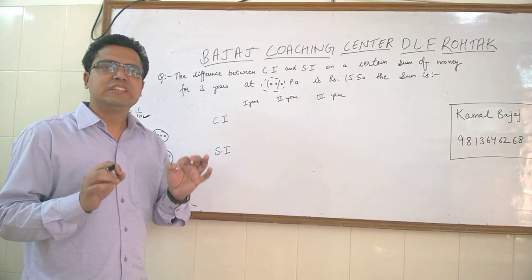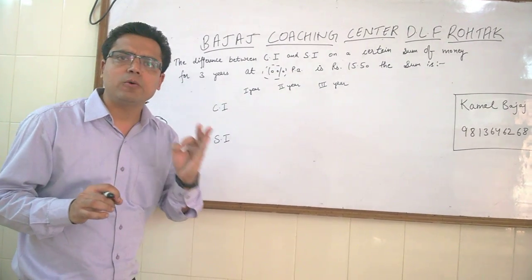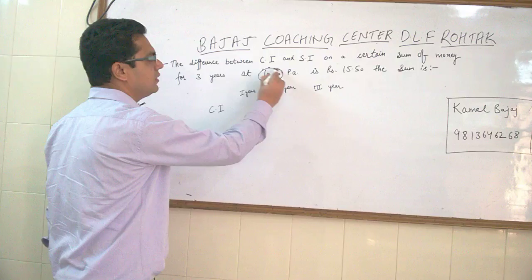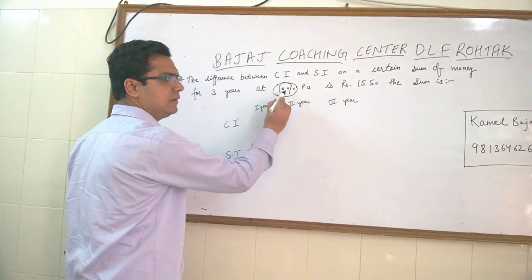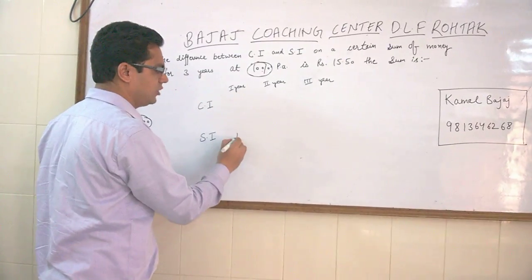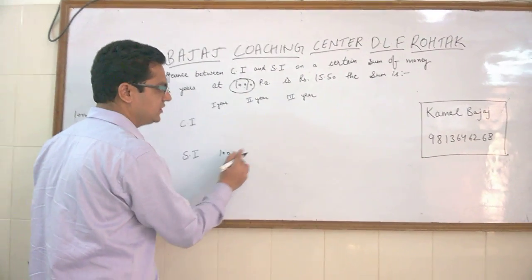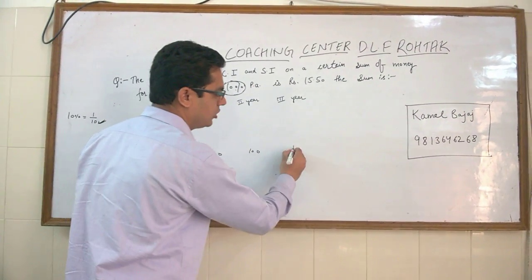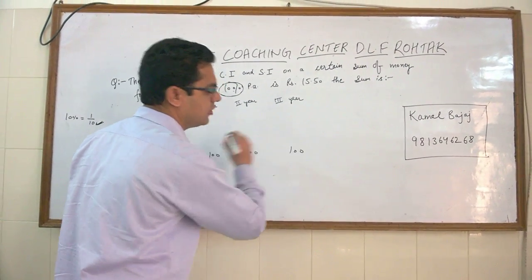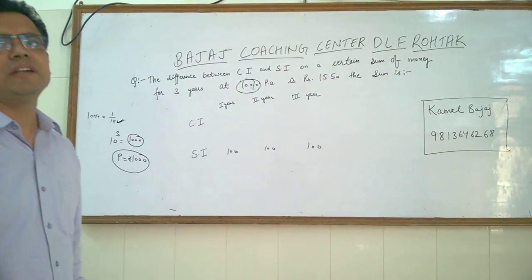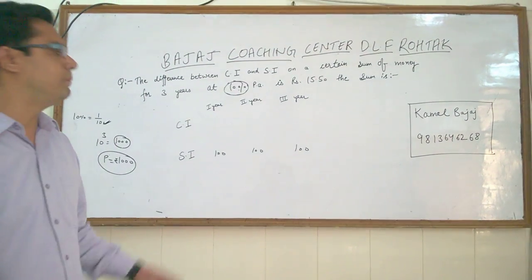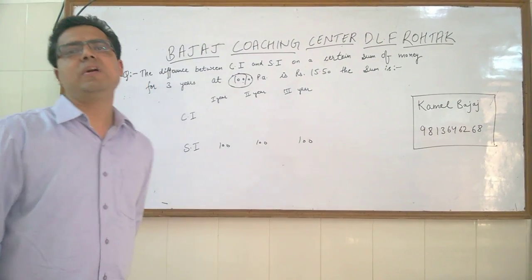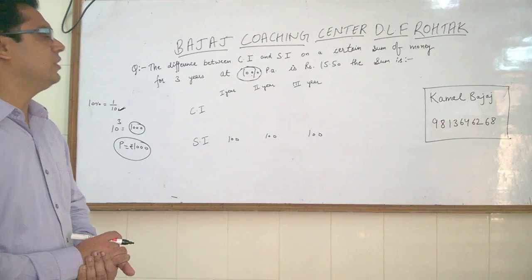Now, we know that simple interest is equal every year. So for 1000, 10% of 1000 is 100 rupees. For the 1st year it is 100 rupees, for the 2nd year it is 100 rupees, for the 3rd year it is 100 rupees. This is the concept of simple interest — that simple interest is equal every year.